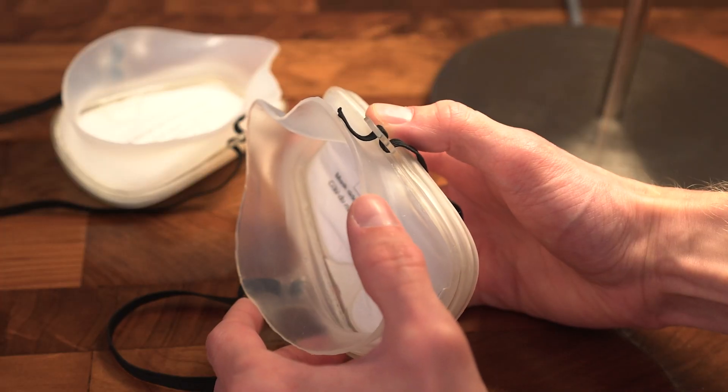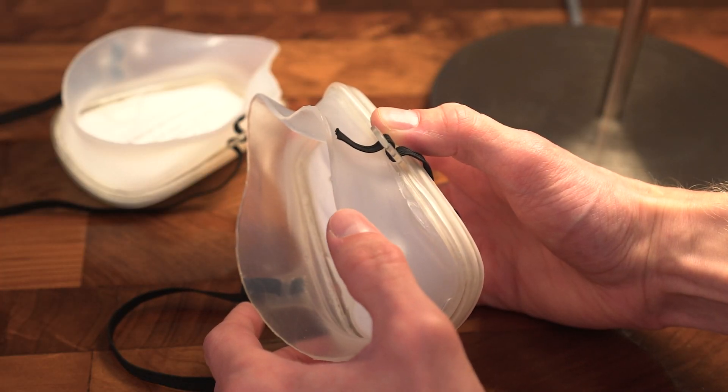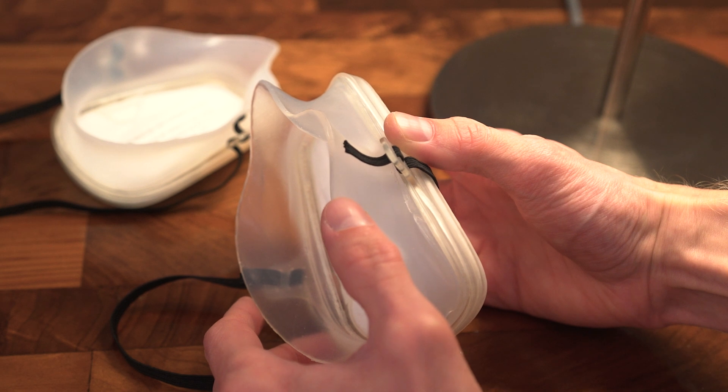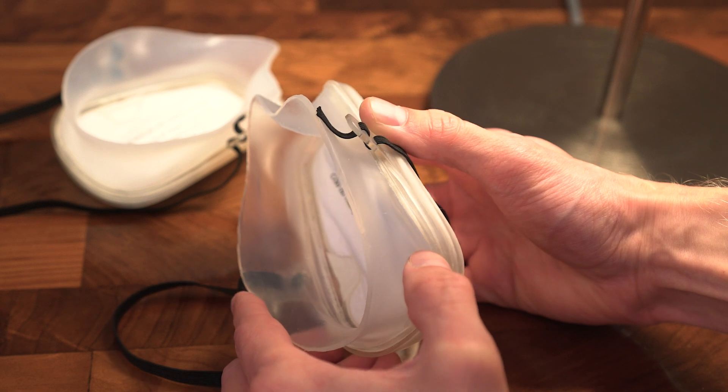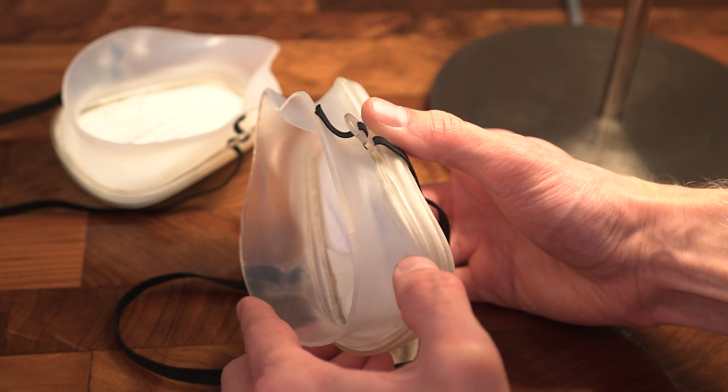The biggest issue I have with this mask is the connection between the silicone and the plastic. If you all have any suggestions for what glue or method might work better than the Sil-Poxy used in this video, please let me know in the comments.